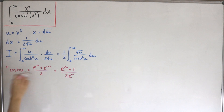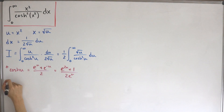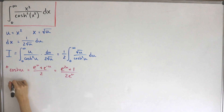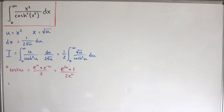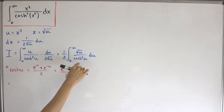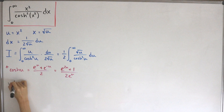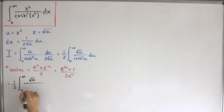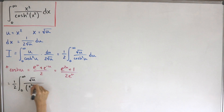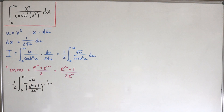Substituting this new form for the hyperbolic cosine back into our integral, we have one-half times the integral from zero to infinity of the square root of u on the numerator, divided by (e^(2u) + 1) over (2e^u), all squared, then du. Squaring the denominator gives a factor of four, which we factor out.